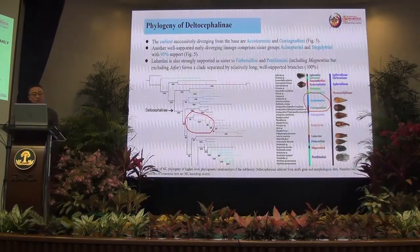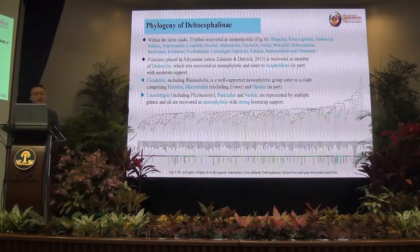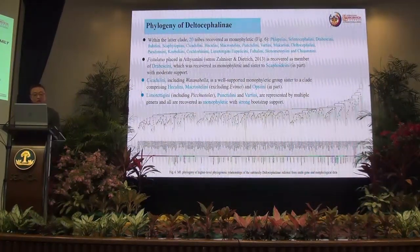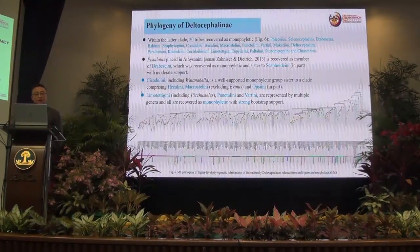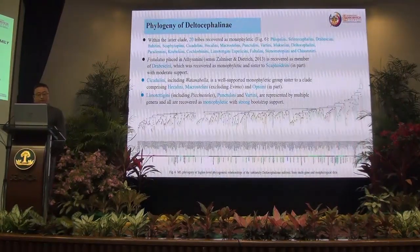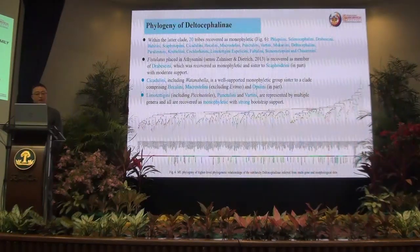Ruanini also receives strong support and is sister to Fieberiellini and Penthimiini. With the latter clade, the 20 tribes recovered as monophyletic. The festive tribe placed in the Scaphytopiini is recovered as a member of the Parabolocratus tribe, which was recovered as monophyletic and sister to Scaphytopiini, with moderate support. The Colobesthini, including Watanabella, is a well-supported monophyletic group sister to a clade comprising Macroceratogonia and Opsiini in part.